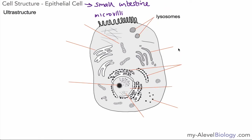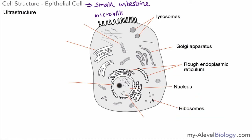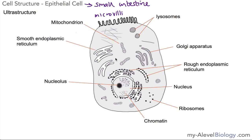Here in the corner we have lysosomes; this is the Golgi apparatus; here we have rough endoplasmic reticulum; the nucleus; ribosomes which are either free in the cytoplasm or attached to the rough endoplasmic reticulum; chromatin which is in fact DNA; a nucleolus — a structure within the nucleus; smooth endoplasmic reticulum; and mitochondria — remember the plural of mitochondrion is mitochondria. Note that smooth ER is usually continuous with the nuclear membrane, though that isn't shown in this diagram.